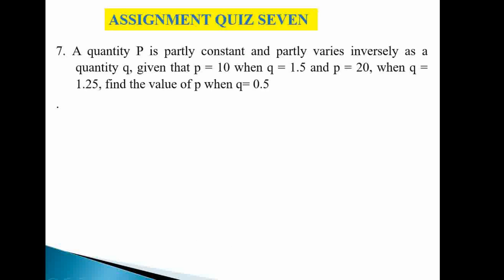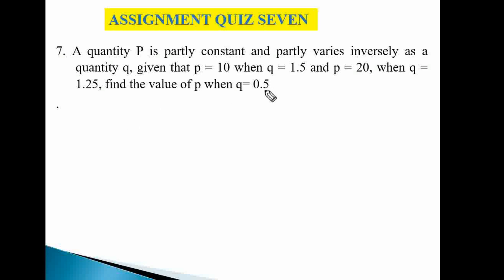Question seven assignment: A quantity P is partly constant and partly varies inversely as Q. Given P = 10 when Q = 1.5, and P = 20 when Q = 1.25, find the value of P when Q = 0.5.